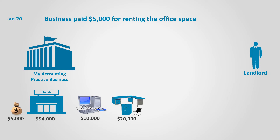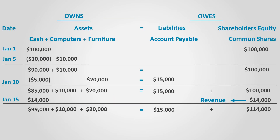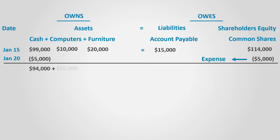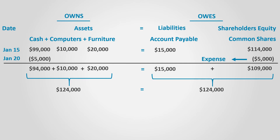On January 20th, the business paid $5,000 for renting the office space. Paying office rent is essential to be able to generate revenue — this is what we call an expense, an amount paid to generate revenue. Assets are reduced in the form of cash for $5,000, making total assets equal to $124,000. The shareholders' equity decreased by $5,000 after this transaction. We can deduce that expenses decrease shareholders' equity.